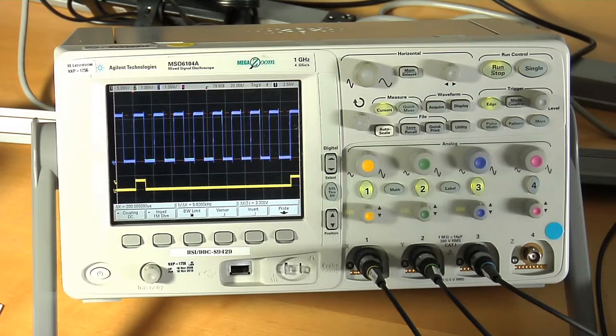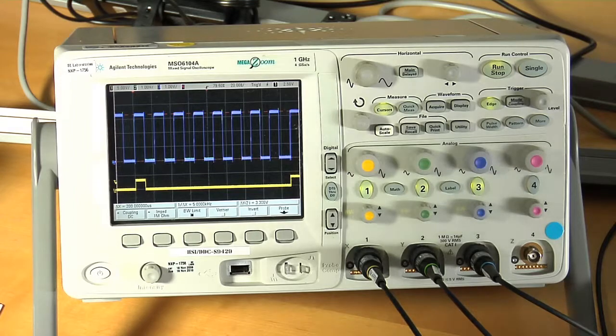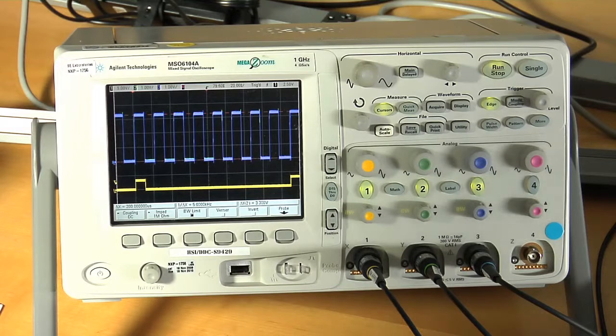NXP's I2C level translators easily bridge different power supply and signal voltage systems in the range of 15 volts down to as low as 1 volt.